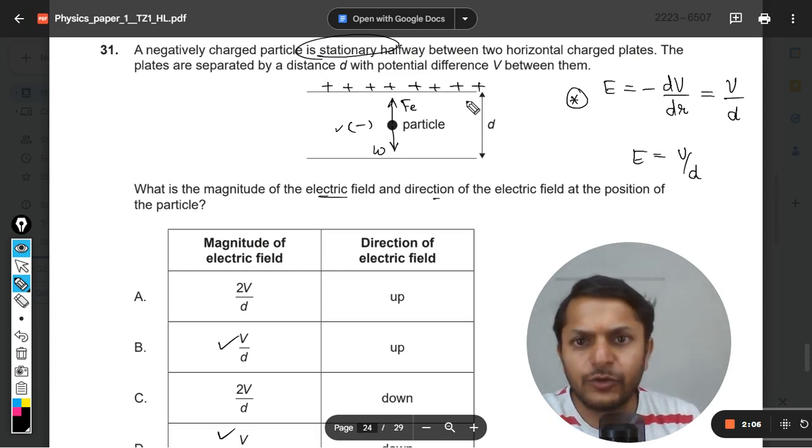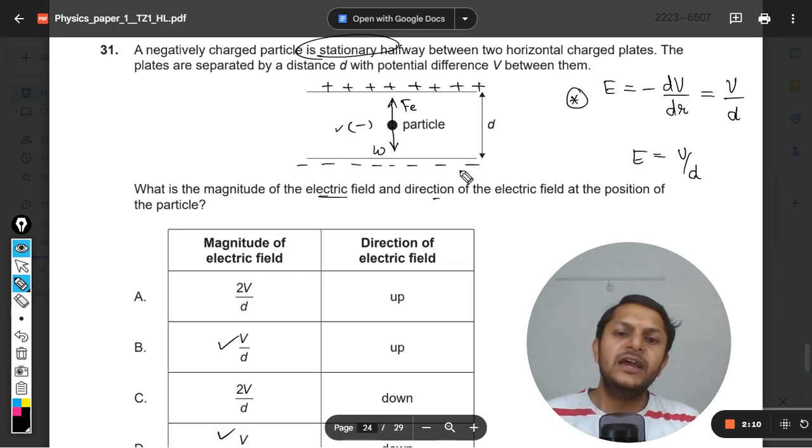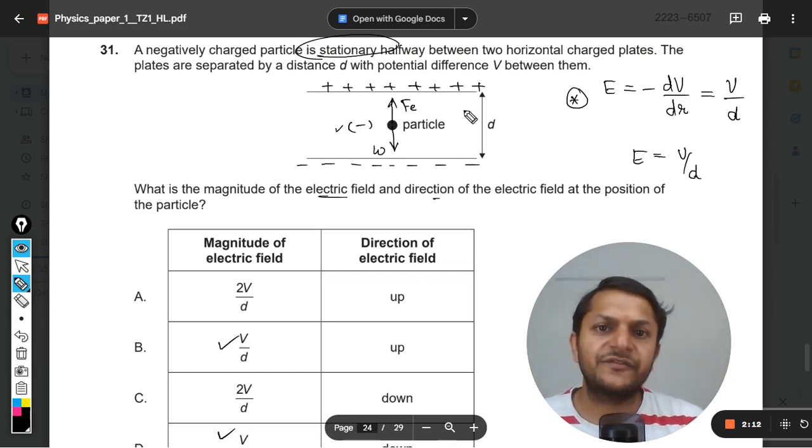The upper plate should be positively charged, because negative and positive would be attracting and the lower plate will be negatively charged, clearly. And so the direction of the electric field will be from the positive side to the negative side.